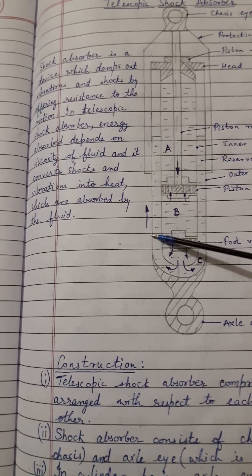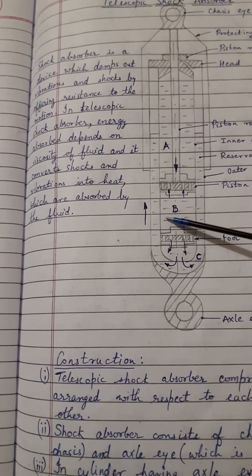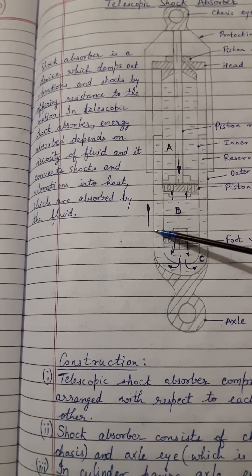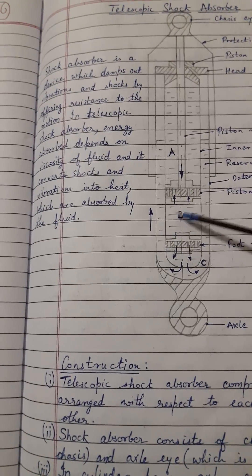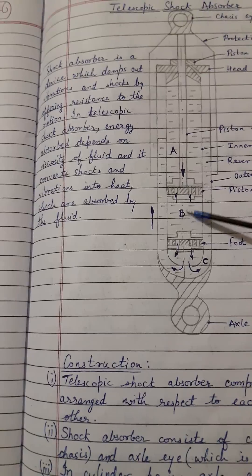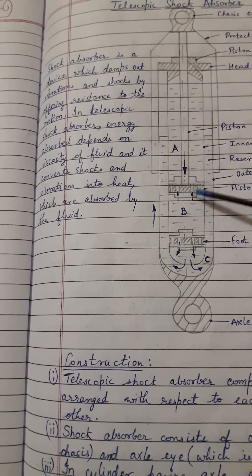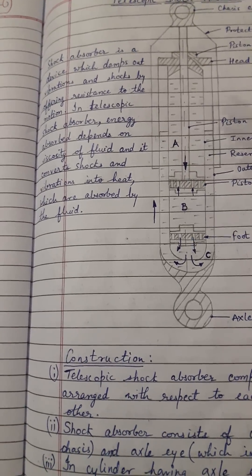The movement of the fluid in these three chambers — whether the vehicle faces a bump or a pothole — means all the vibration is absorbed by the movement of fluid through these openings or holes.